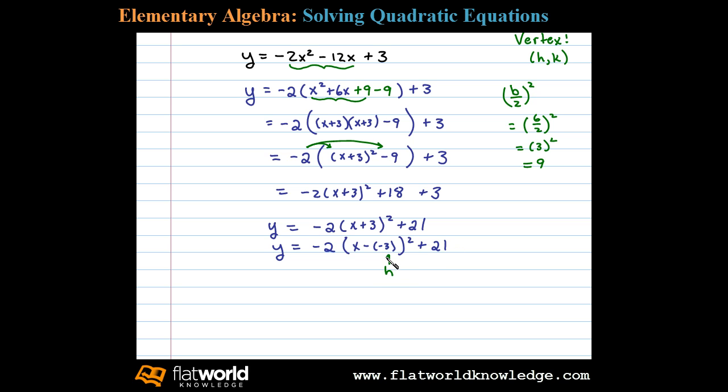Now here we can see h is negative 3 and k is 21. Therefore, the vertex in this case is negative 3 comma 21.